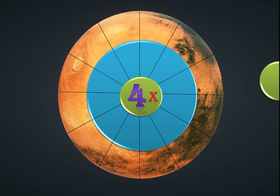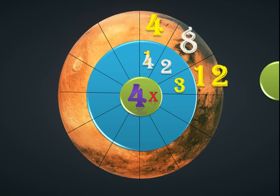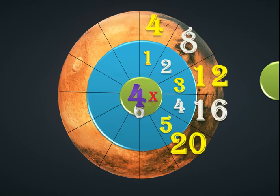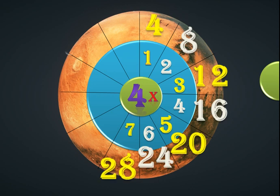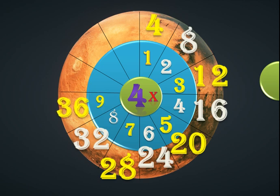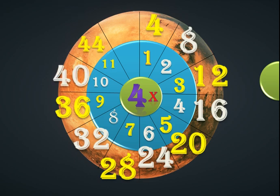And this is how we finish. We're going to see our wheel again — our 4 times wheel. 4 times 1: 4. 4 times 2: 8. 4 times 3: 12. 4 times 4: 16. 4 times 5: 20. 4 times 6: 24. 4 times 7: 28. 4 times 8: 32. 4 times 9: 36. 4 times 10: 40. 4 times 11: 44. 4 times 12: 48.